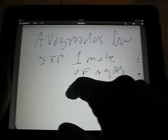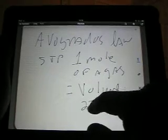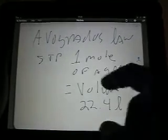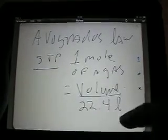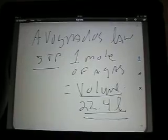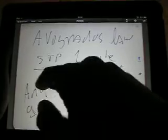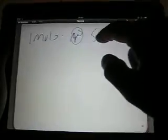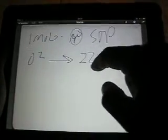One mole of a gas is going to equal a volume of 22.4 liters. So let me just say that again. At standard temperature and pressure, one mole of a gas is going to give you a volume of 22.4 liters. One mole of any gas.